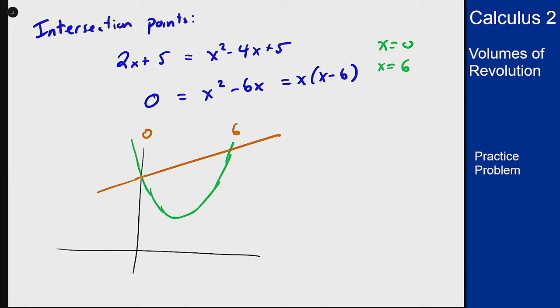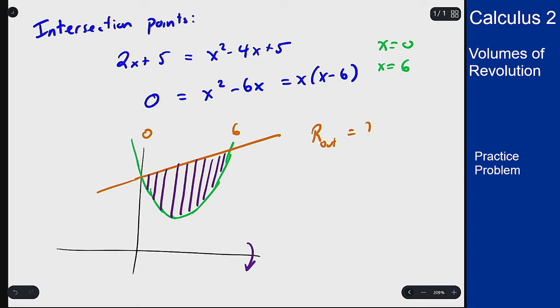I'm going to revolve this region around the x-axis, so we're rotating around here, and we'll do this using the washer method by rotating those segments. So based on this, our outer radius is the straight line, so that's 2x plus 5. Our inner radius is the parabola.